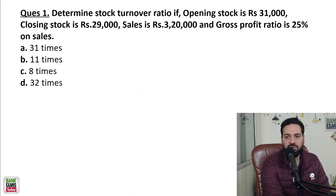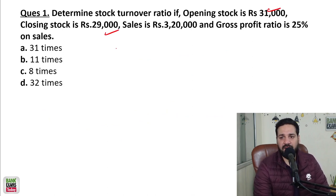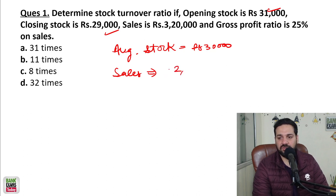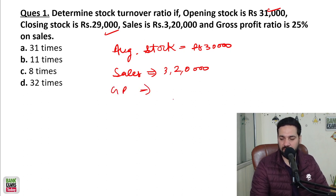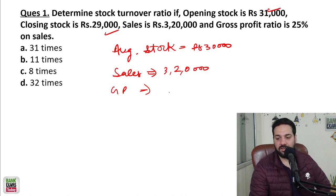Let's determine the stock turnover ratio. The opening stock is 31,000 and the closing stock is 29,000, so the average stock is 30,000. The sales is 3,20,000 and the gross profit is 25%. So 25% of 3,20,000 is 80,000.